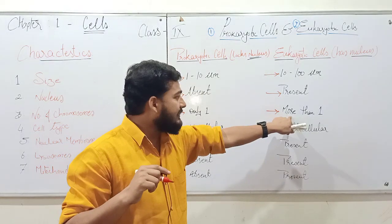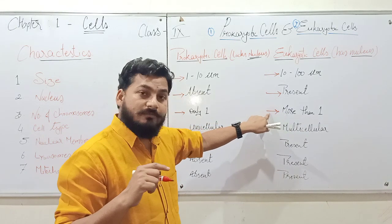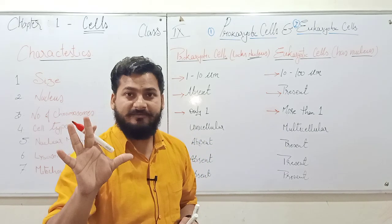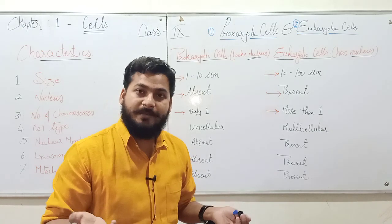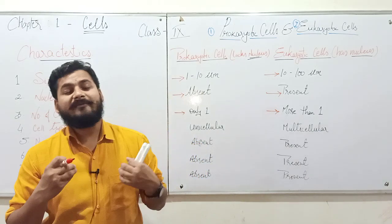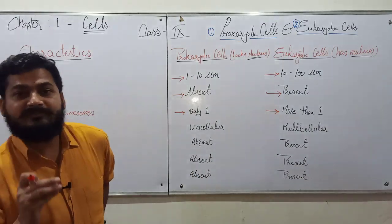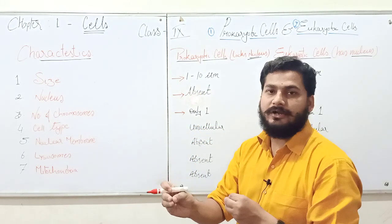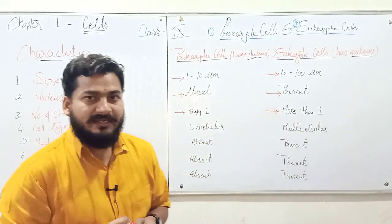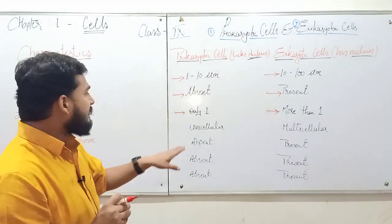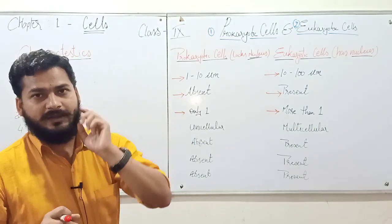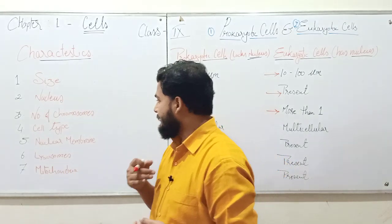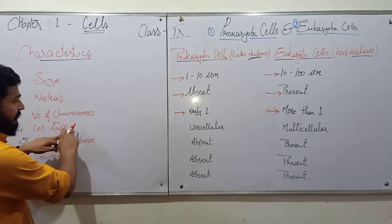More than 1 chromosome means a particular eukaryotic cell may contain 2, 3, 4, 5, or as in our case 46, which is 23 pairs as in humans. Different eukaryotic cells have different numbers of chromosomes, but in all types of prokaryotic cells the number of chromosomes will be only 1, and that chromosome is also not very well developed in many cases.